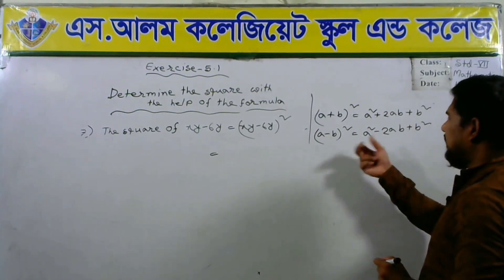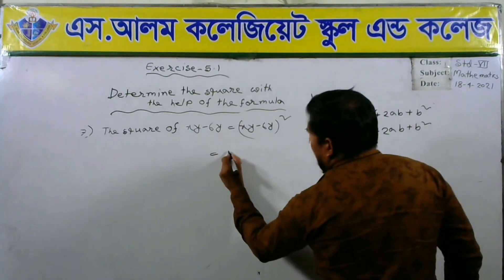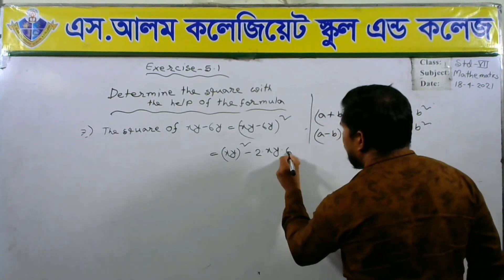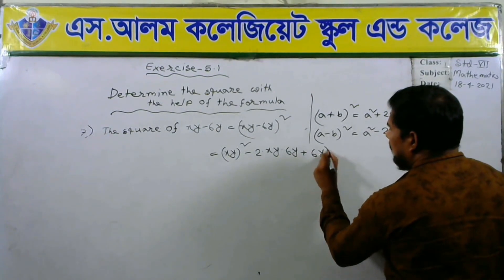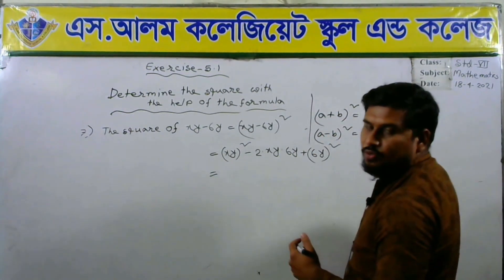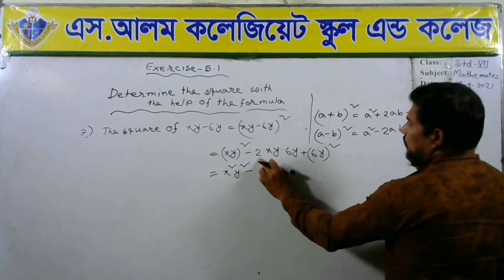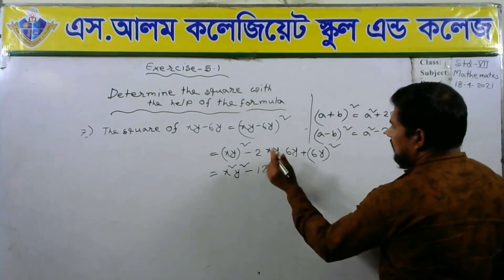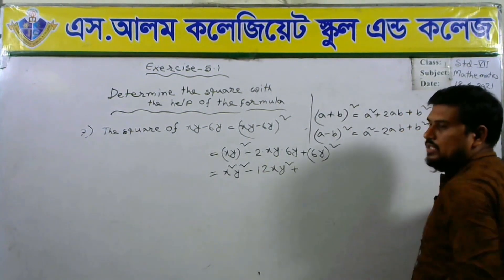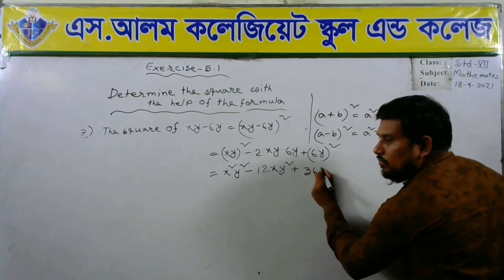We can arrange with the help of a minus b whole square: x square minus 2ab plus b square. It is similar to a minus b whole square. So xy we can write xy whole square minus 2 into xy into 6y plus 6y whole square. xy whole square means xy into xy equals x square y square. 6y whole square equals 6 into 6 equals 36 and y into y equals y square, so 36y square. The answer is x square y square minus 12xy squared plus 36y square.